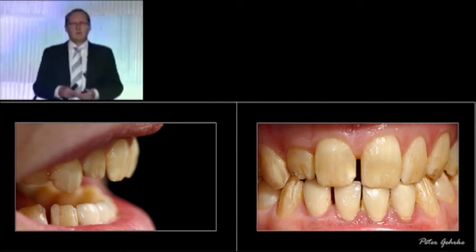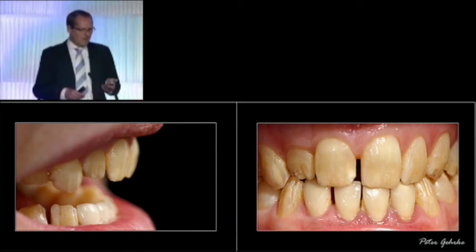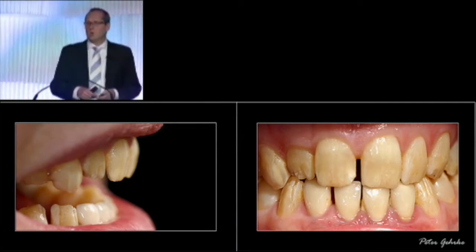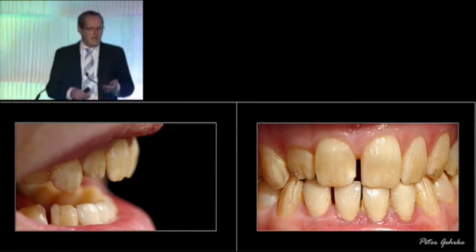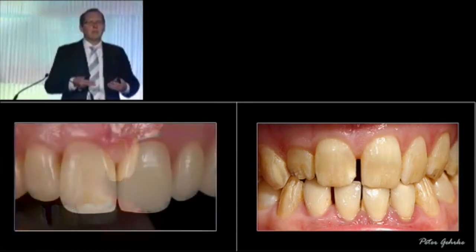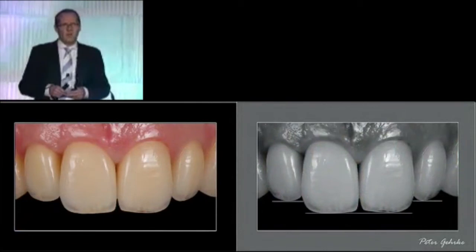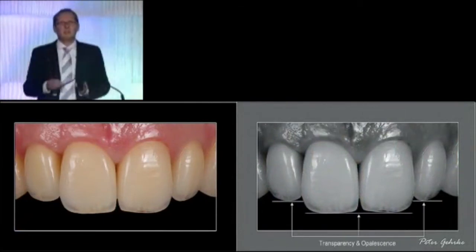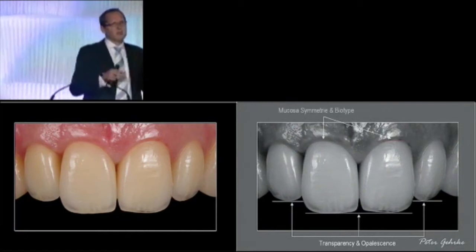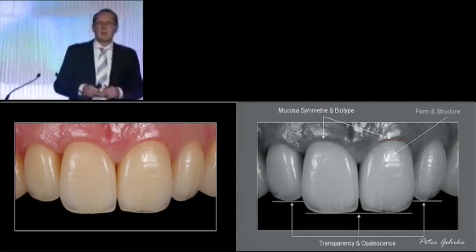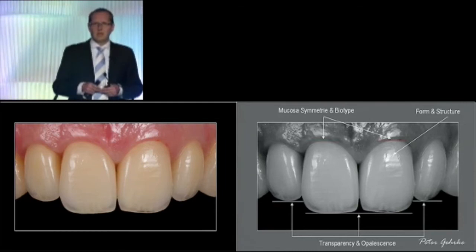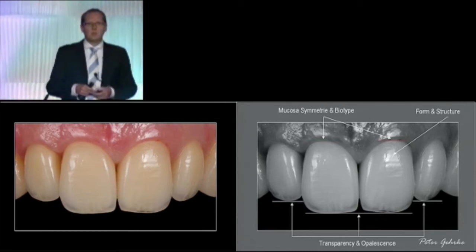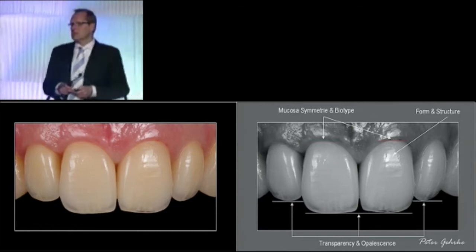Are there any rating measurements for implant aesthetics, as there are for function? We know there are objective parameters in conventional prosthodontics and restorative dentistry that we rely on, and we are transferring them to implant restorative dentistry. They are all about proportion, symmetry, and color. Transferring that to the peri-implant mucosa, it is about the biotype, the color, the light dynamics, form and structure, and ultimately the color of the restoration.